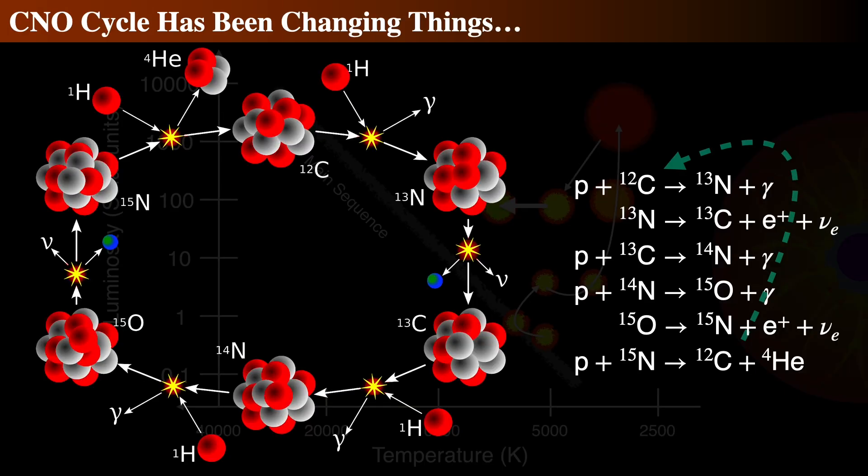Now I want to backtrack just a little bit. Let's take a closer look at something that's already happened back in the main sequence lifetimes of stars that are just a bit more massive than the Sun. It's important to note that many Sun-like stars use the CNO cycle instead of the proton-proton chain for nuclear reactions.